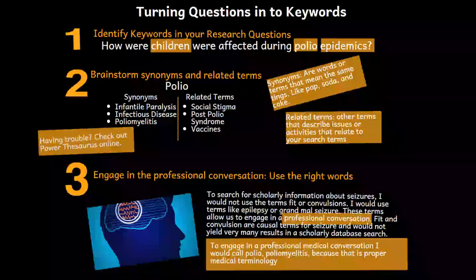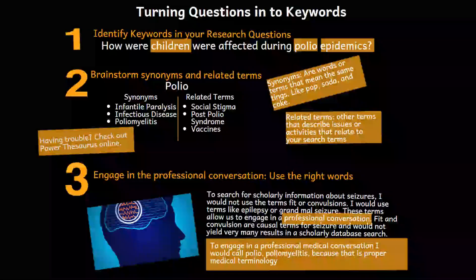You should also look for the technical terms used by experts. In scholarly articles, these are likely to be used rather than popular terms. Likewise, consider broader and narrower terms. Finally, spell out abbreviations. Remember, it takes a little trial and error to develop the best search terms to get the results you need. Once you have some keywords to try, you can begin experimenting with different combinations.